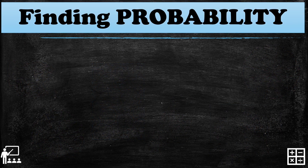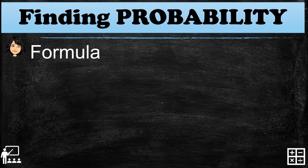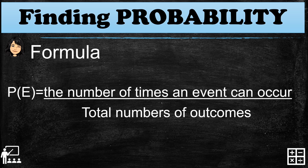So how do we find probability? We use the formula: P equals the event, which is the number of times an event can occur over the total number of outcomes. The number of times an event can occur is the event we want to see, and the total number of outcomes is the total number of possible results in the experiment.